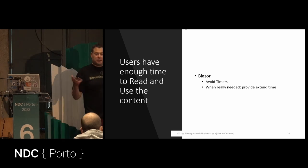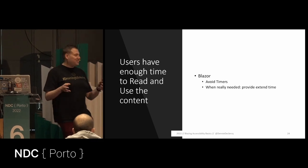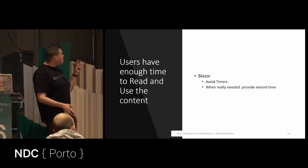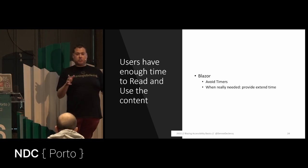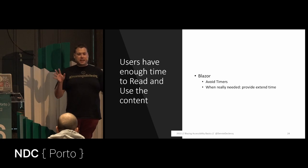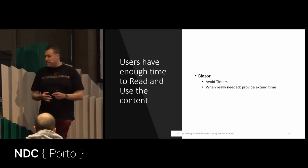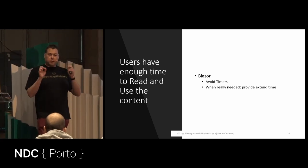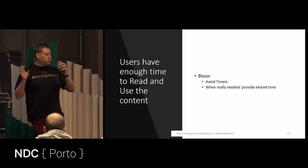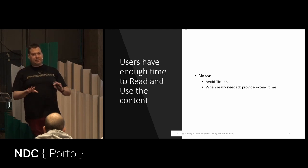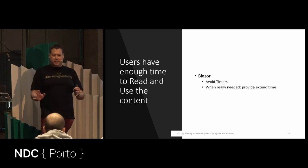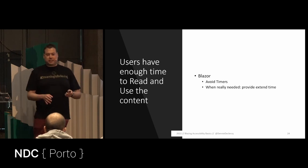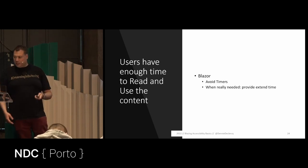Users must have enough time to read and use content. In Blazor, the simple guidance is: avoid timers. Of course sometimes timers are necessary — like when buying concert tickets, where leaving the browser open could block the system. If you must use a timer, provide a button to extend the time. That's the accessible approach: avoid timers where possible, and if needed, provide an extend button.